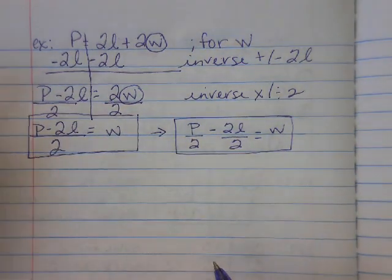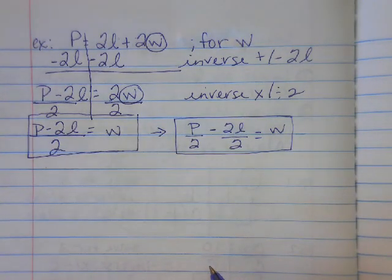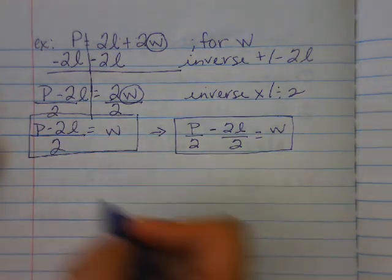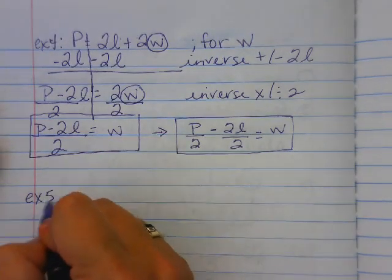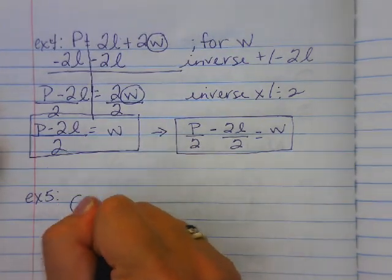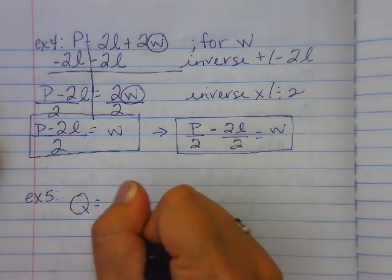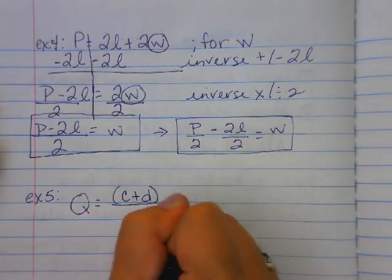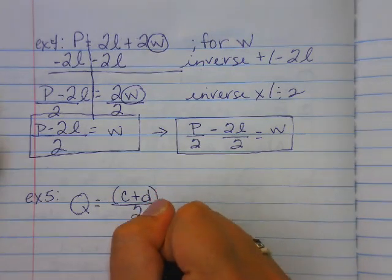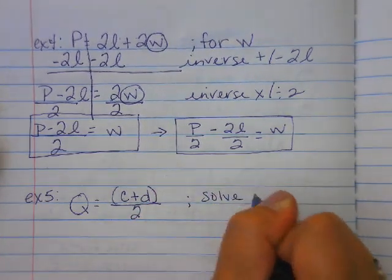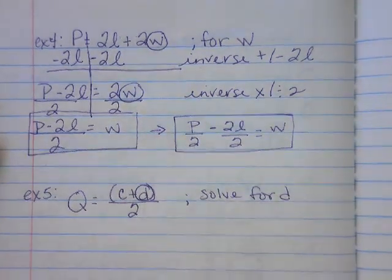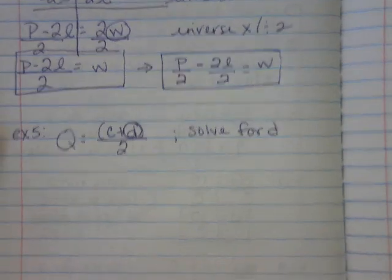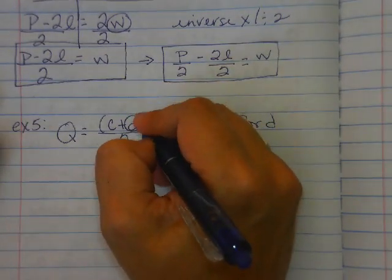All right, one last example. I'm sure this is a science equation. I'm not really sure what it would be used for. But it is going to be Q equals the quantity of c plus d over 2. I'm going to ask you to solve for d here. Now notice this one is in the parentheses. In order for us to do this, we're going to have to do a couple of things. We need to get rid of the top layer.